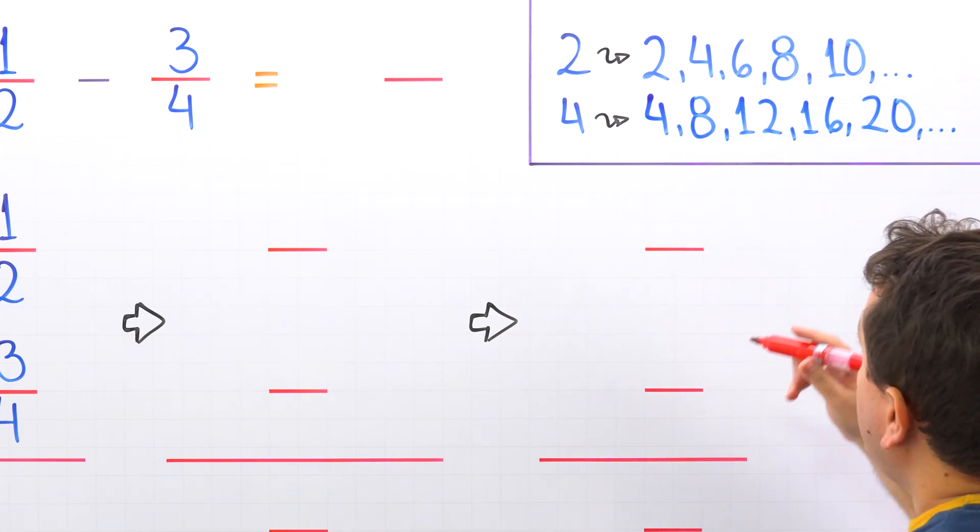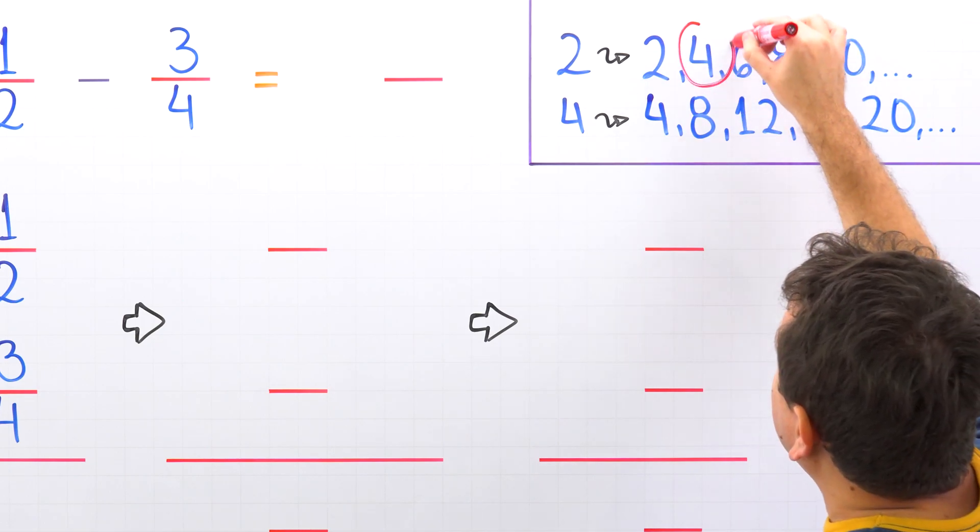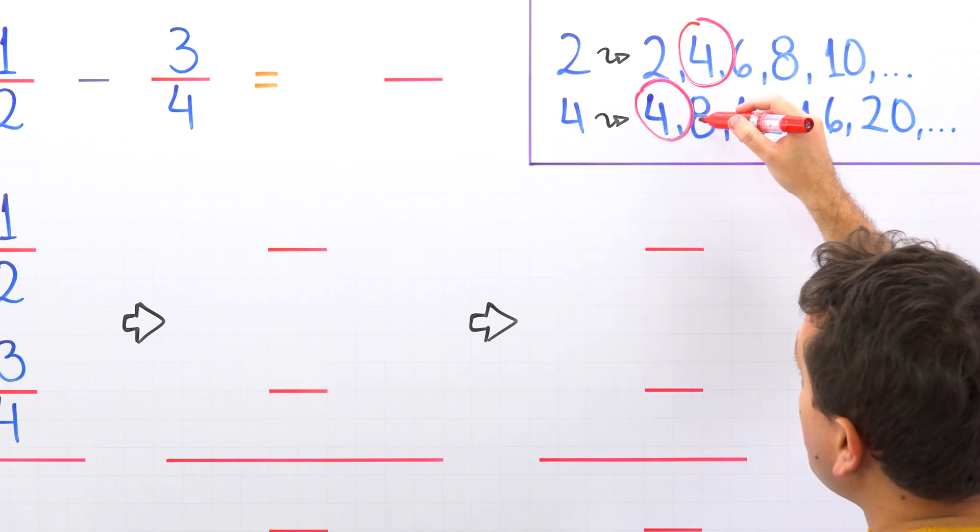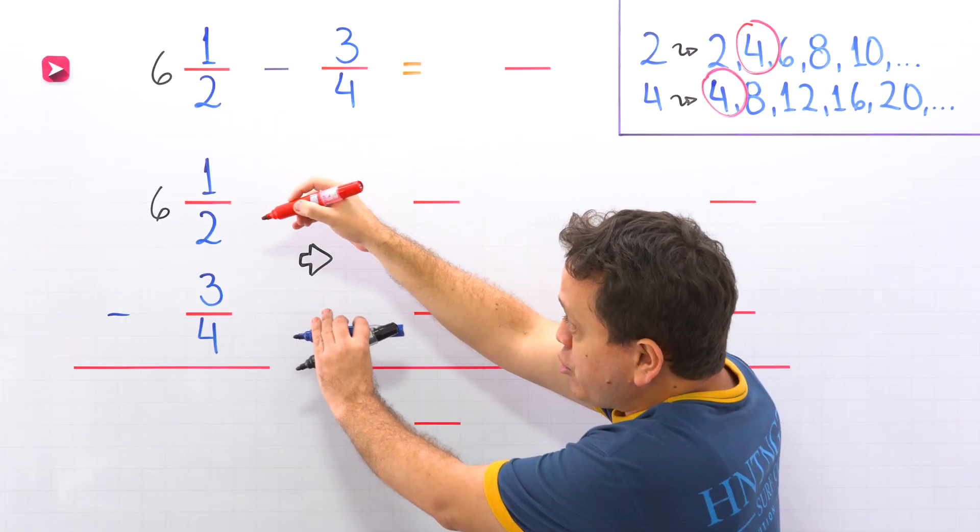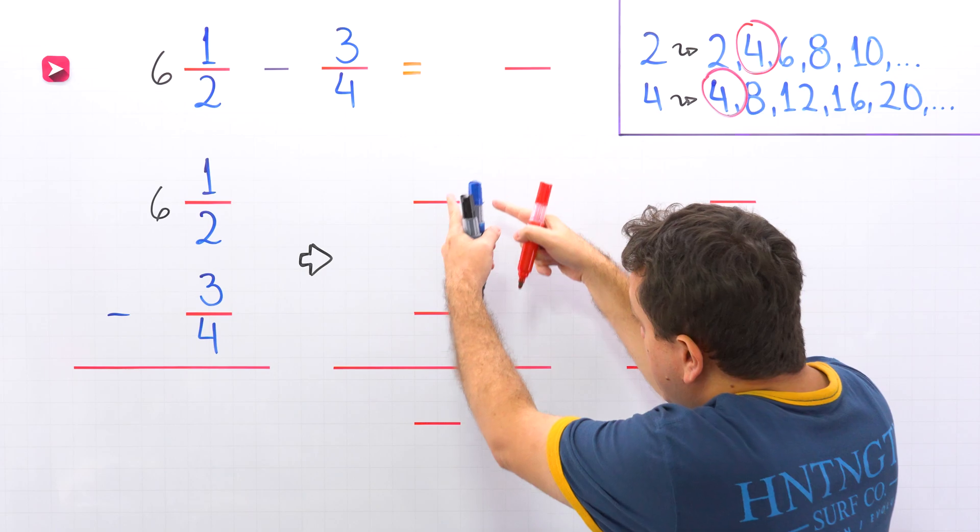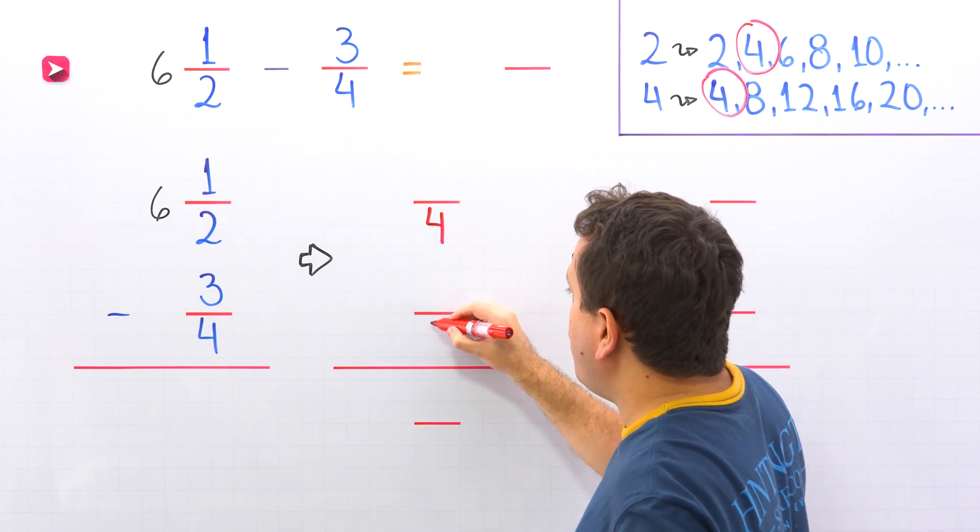As you can see, the smallest number that we can find on both lists is 4. Therefore, 4 is the least common denominator. And now, for each fraction, we need an equivalent fraction with a denominator of 4.